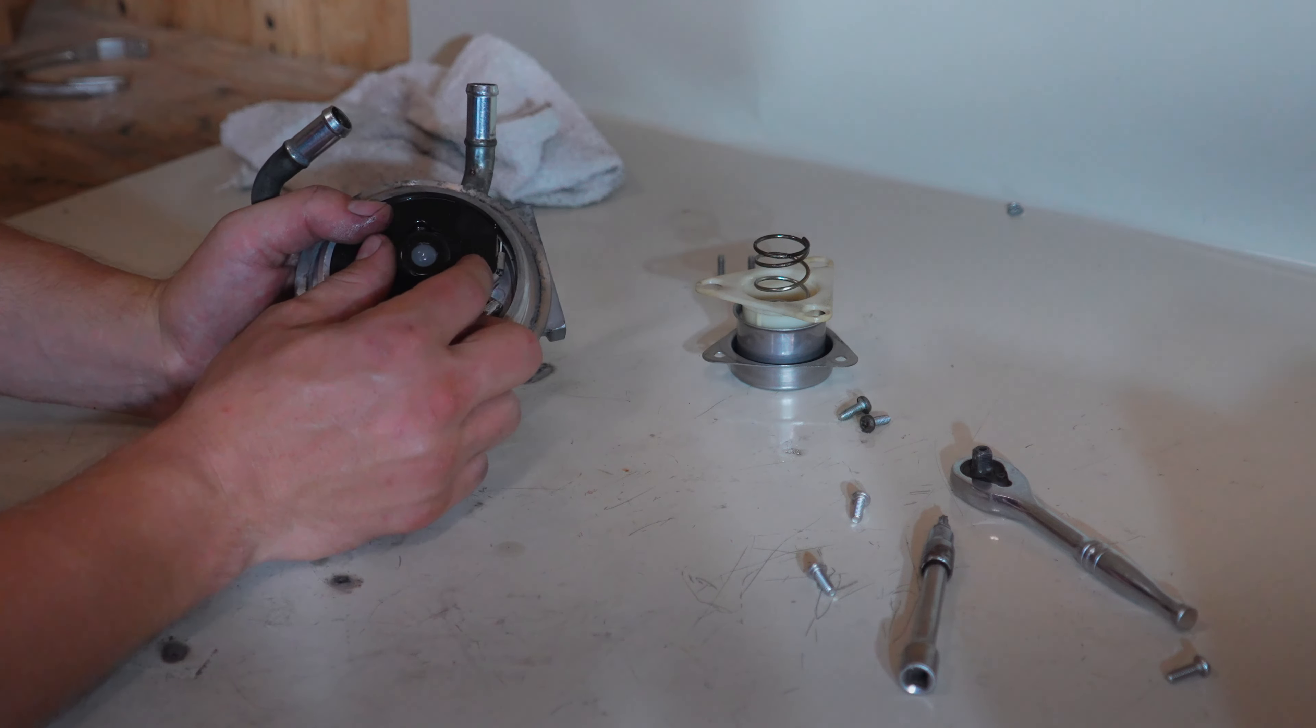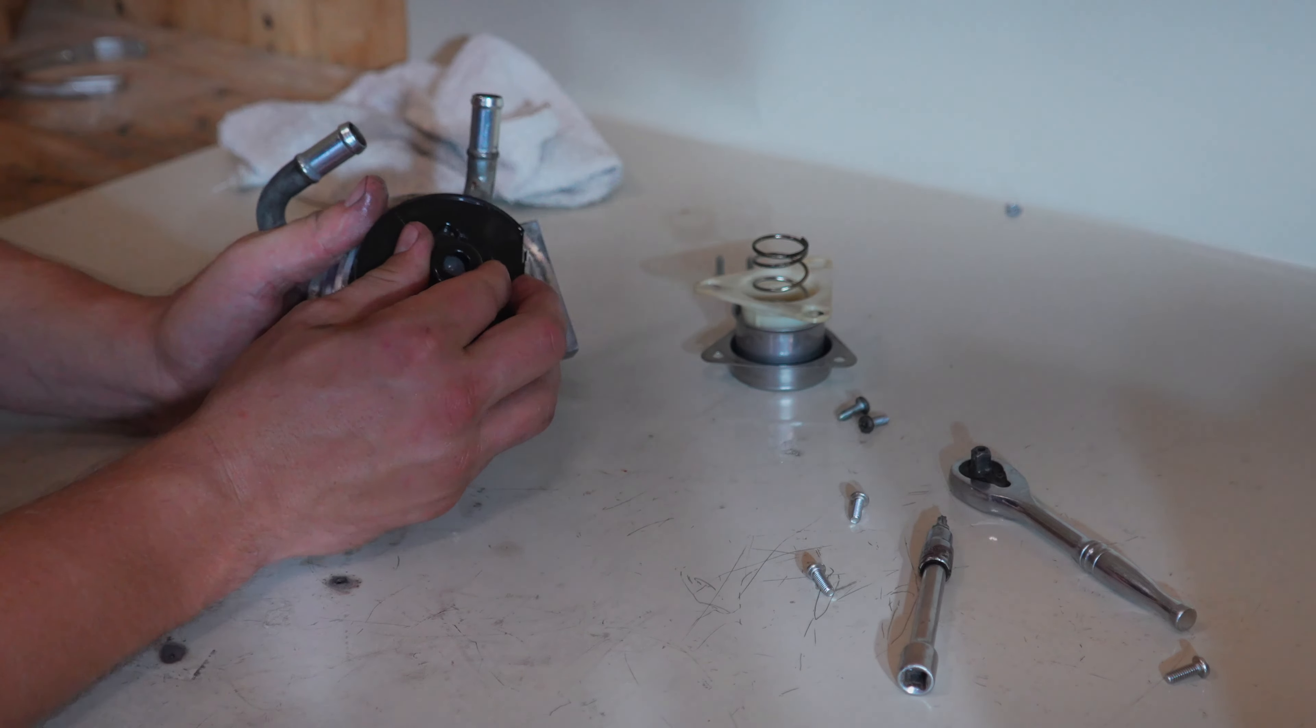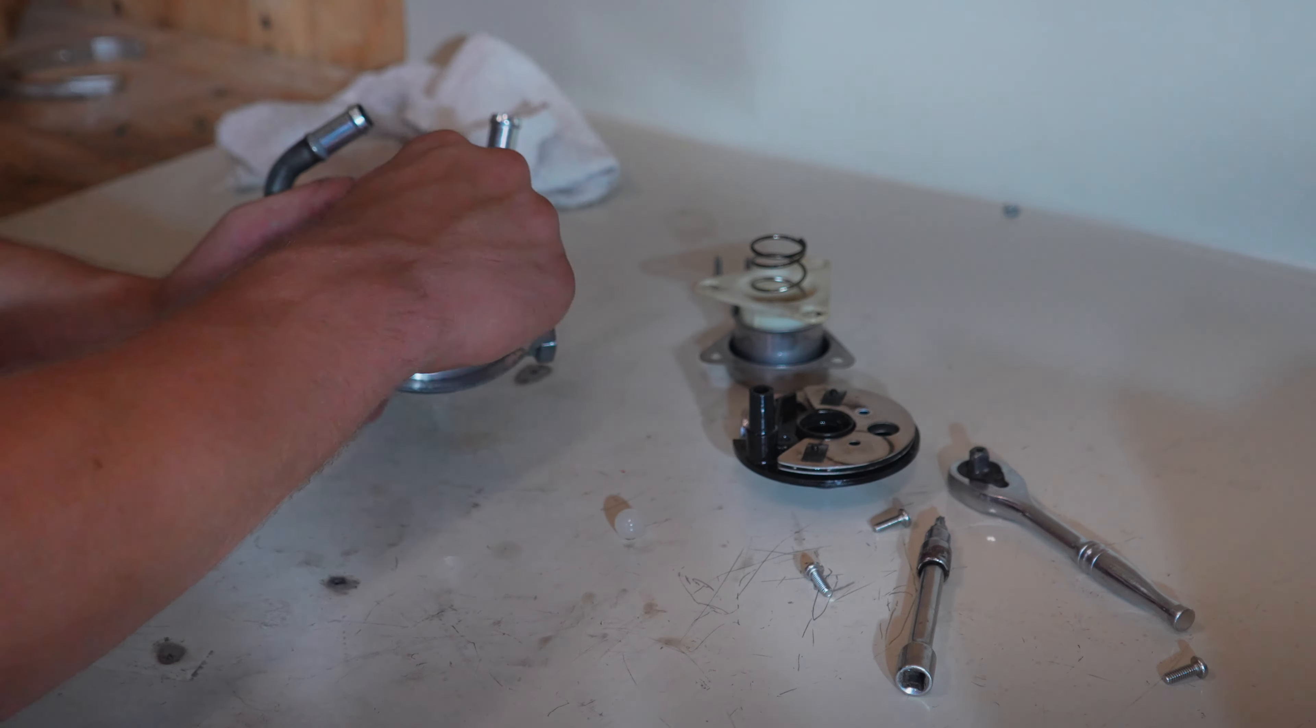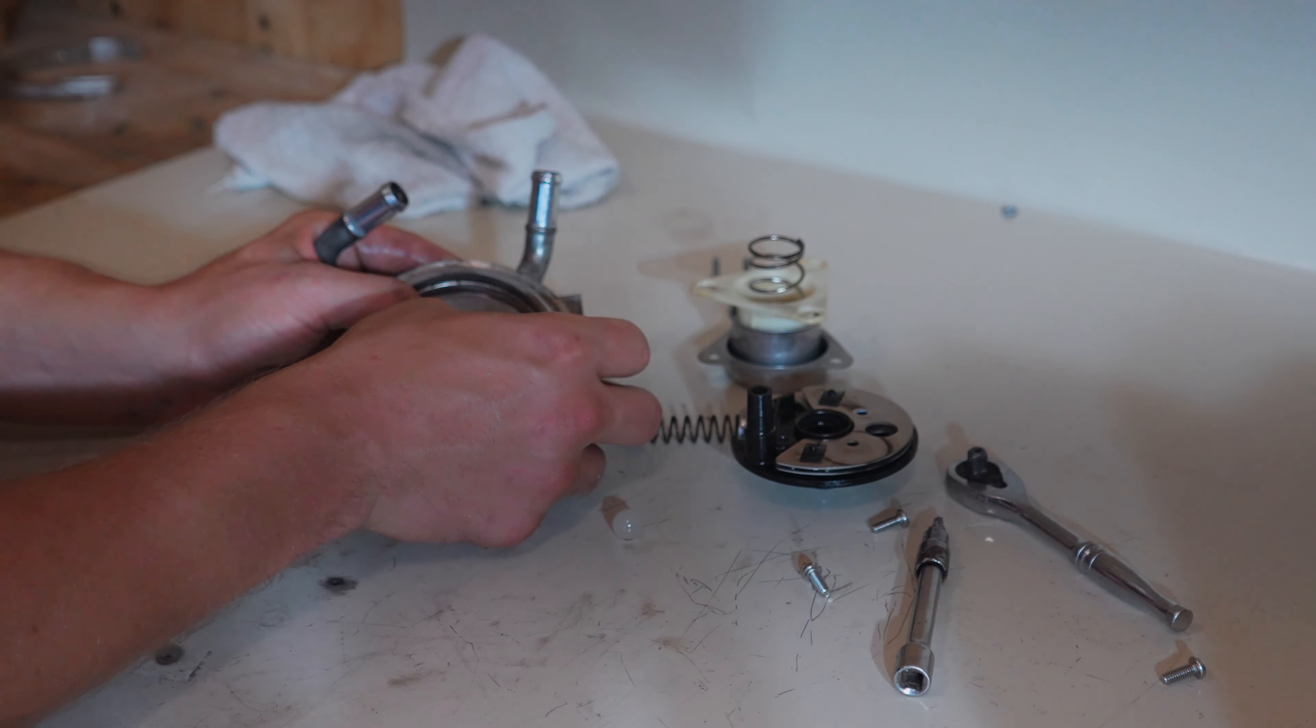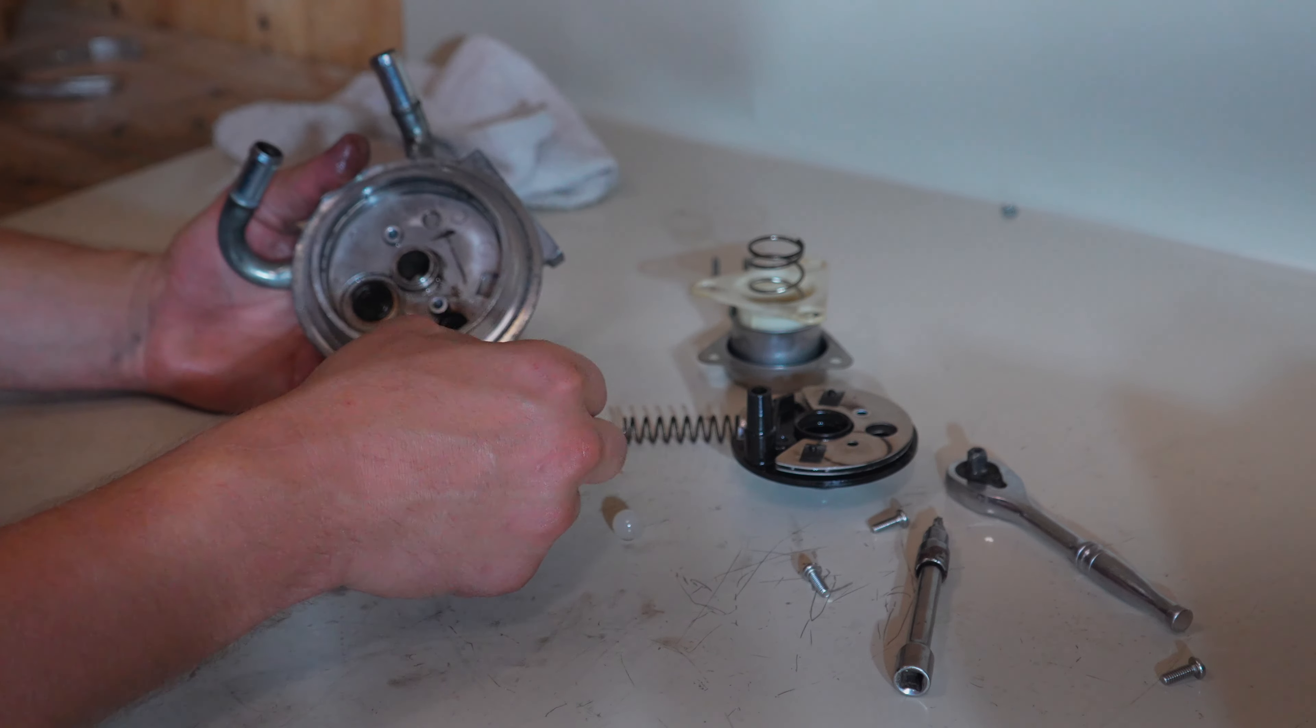So now we're going to take this black piece out. Just be mindful, this is a check ball, it might fall out on you. And then there's also a spring underneath that. As we can see, this O-ring just kind of fell off. It was actually on there like that, which that's all right. We'll go ahead and take it off.